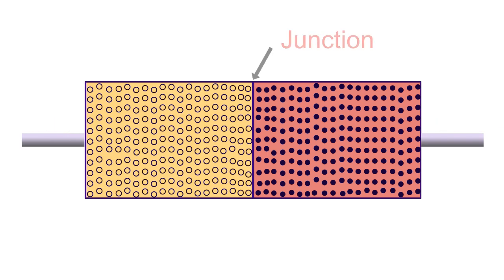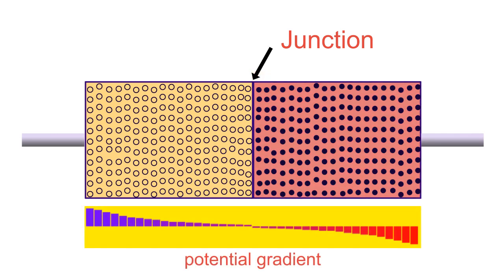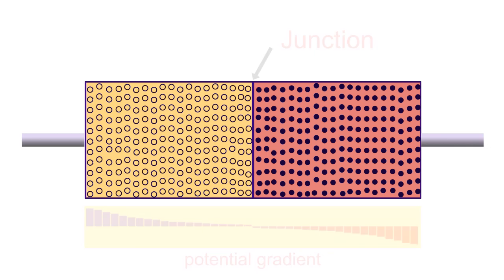On one side of the junction, there is a high concentration of holes, or positive charge. On the other side, there is a high concentration of electrons, or negative charge. This separation of charges forms a potential gradient across the junction, and the process of diffusion gets started.